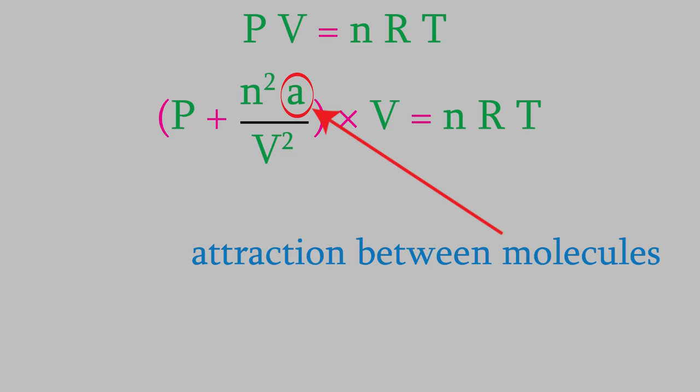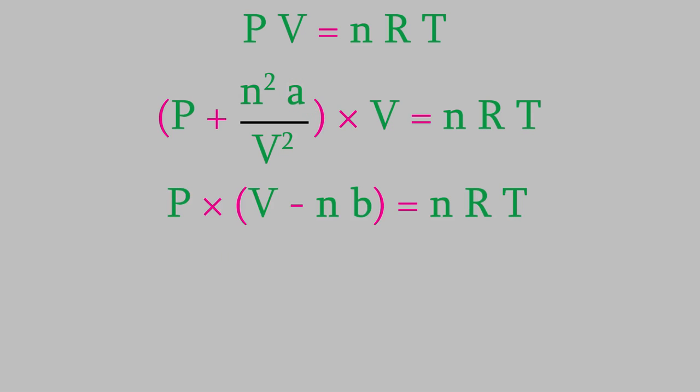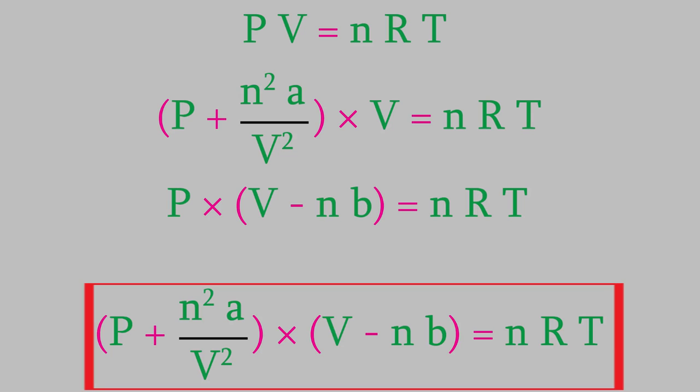So there were two assumptions in the kinetic theory, and as a result, we had to make two corrections to the ideal gas law. If we put them both together, we get this equation. It's more complicated than the ideal gas law, but it's also a lot more accurate.